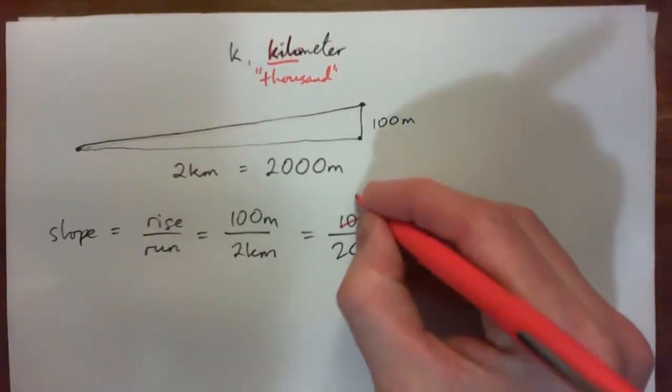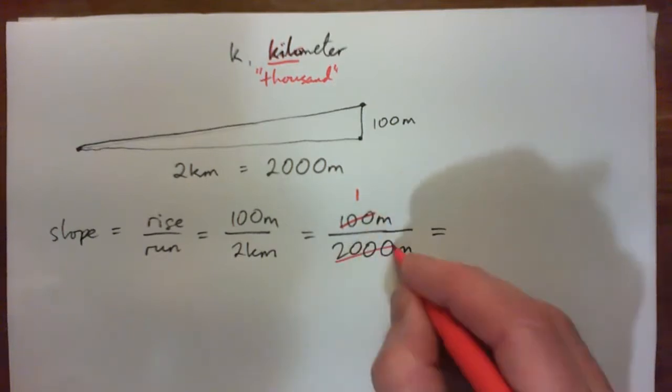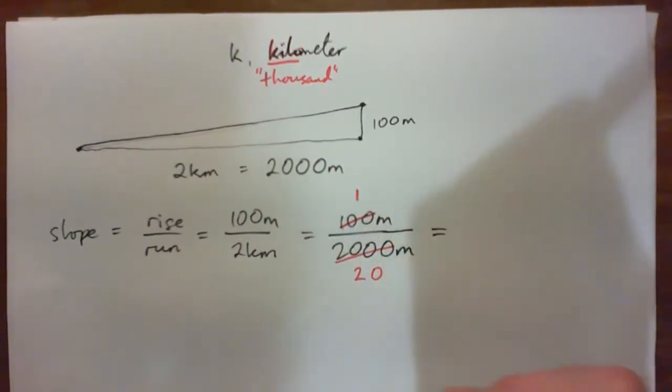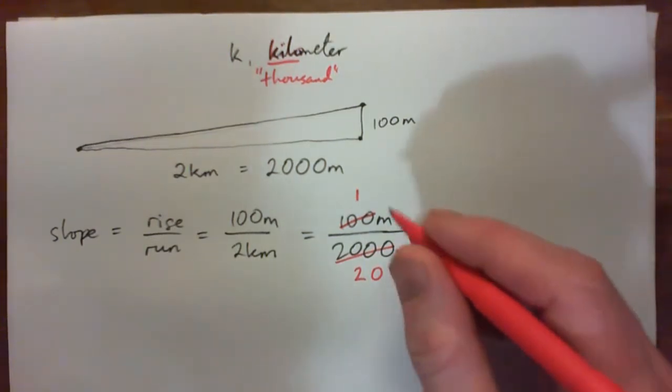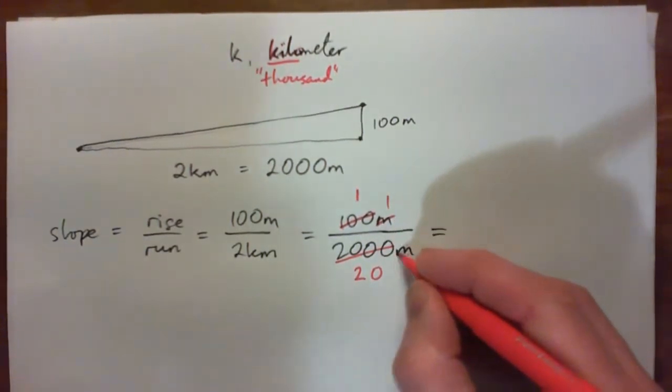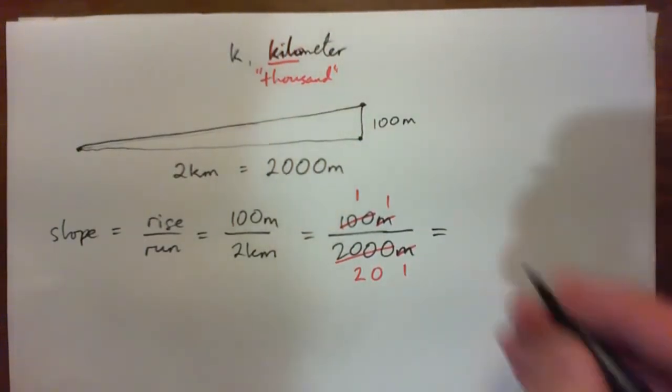So 100 into 100 goes once. 100 into 2,000 goes 20 times. And by the way, I can also cross cancel the meters. Meter into meter goes once. Meter into meter goes once. So I get simply 1 over 20.